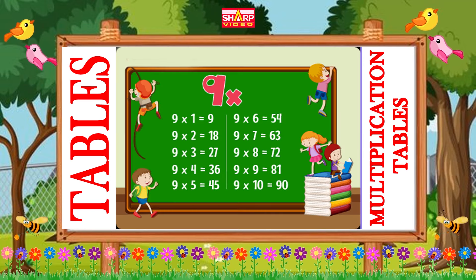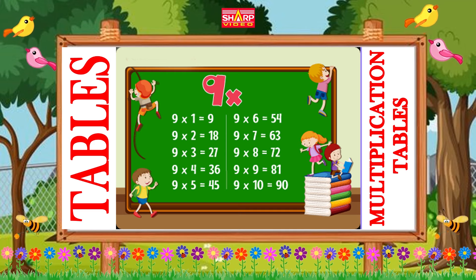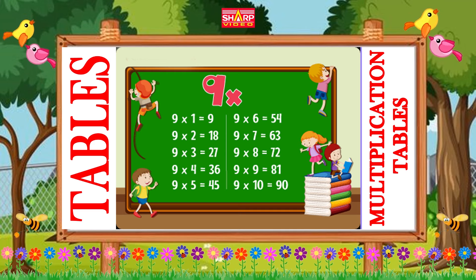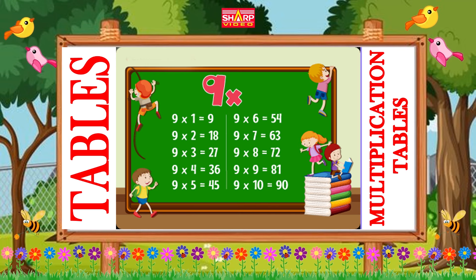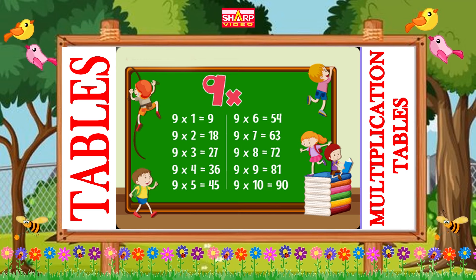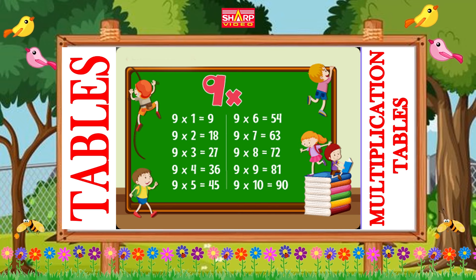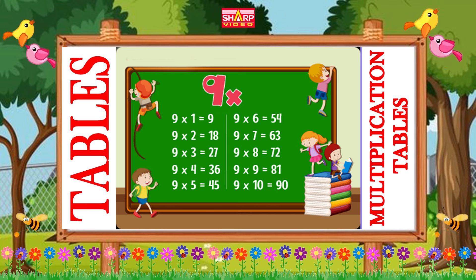nine ones are nine, nine twos are eighteen, nine threes are twenty-seven, nine fours are thirty-six, nine fives are forty-five.